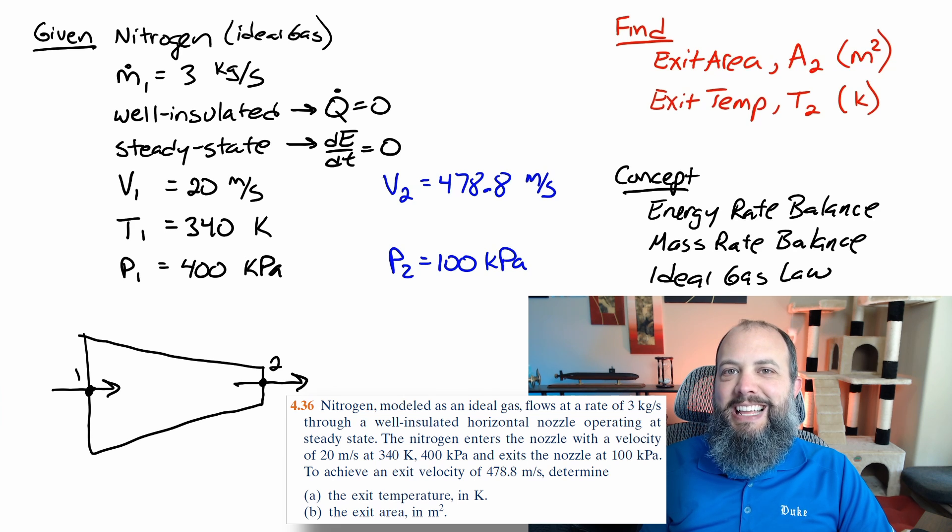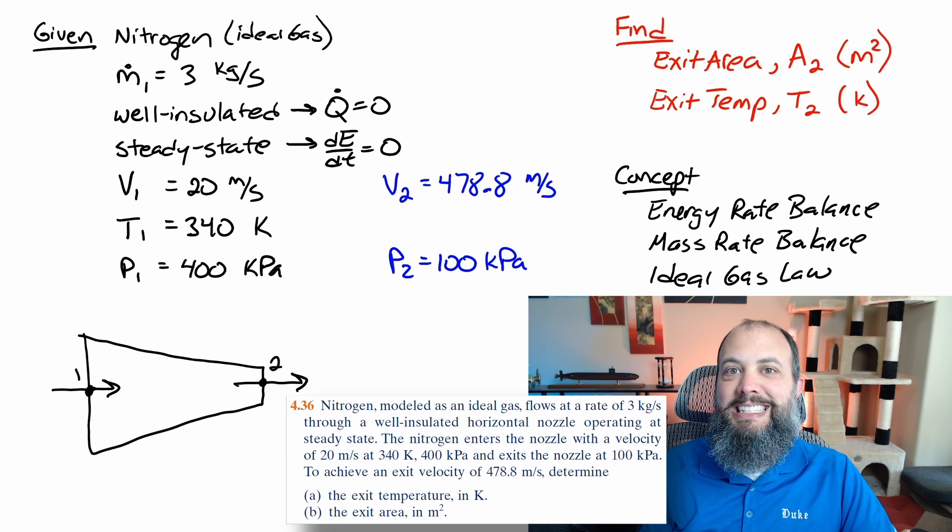The keyword steady state implies that in the energy rate balance, the rate of change of energy in the control volume is zero, so dE/dt is zero. And the well insulated nozzle means that the rate of change of heat transfer, q dot equals zero. Three things for find: a brief word description of what I'm trying to find, the actual variable I'm going to use for that thing, and what units the answer is going to be in.